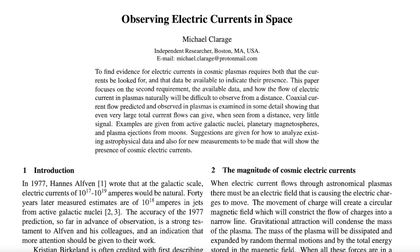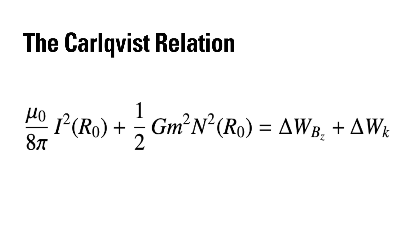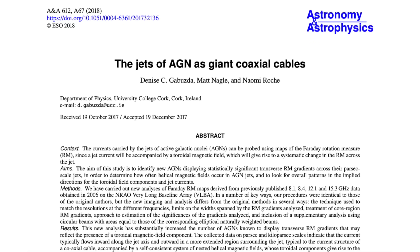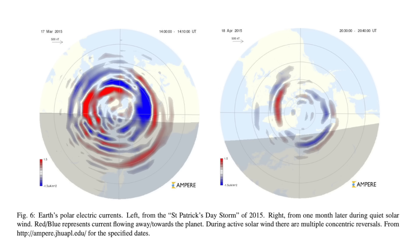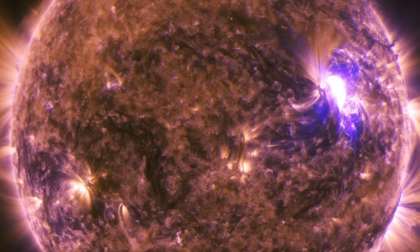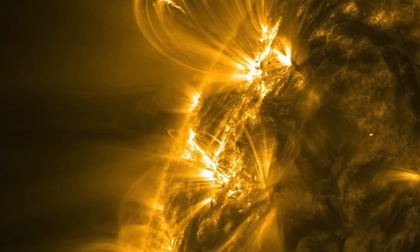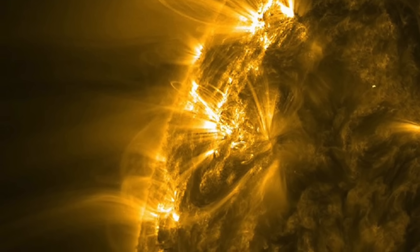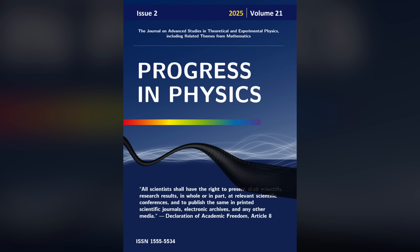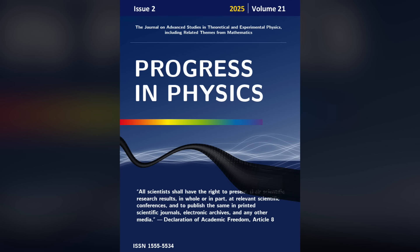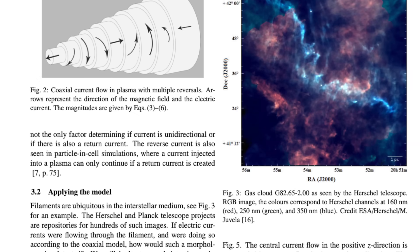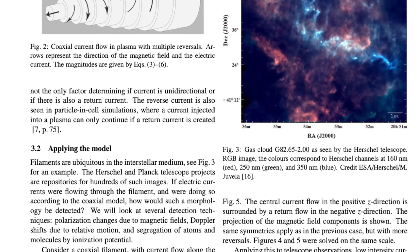To summarize: we have predictions from the Carlquist relationship of the magnitude of cosmic current flow, which has been validated — Alfvén's predictions validated at the galactic level, at the planetary level, at the interstellar medium level, and also at the solar level with currents in and on the surface of the sun, all pretty much exactly predicted by the Carlquist relationship. I then talked about measurements we could make that would show whether or not we have coaxial current flow, and presented examples we already see in space of coaxial current flow that are already present in data we already have.